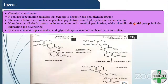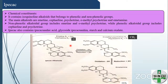Chemical constituents of ipecac: it contains isoquinoline alkaloids belonging to phenolic and non-phenolic groups. Main alkaloids are emetine, cephaline, psychotrine, orthomethylpsychotrine, and emetamine. The non-phenolic group includes emetine and orthomethylpsychotrine; the phenolic group includes cephaline and psychotrine. Ipecac also contains ipecacuanic acid, glycoside ipecacuanin, and calcium oxalate. Frohde's reagent — sulfuric acid and sodium molybdate — gives bright green color with a small quantity of emetine.